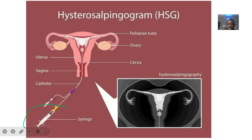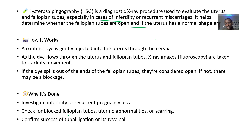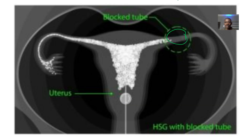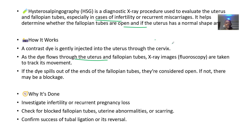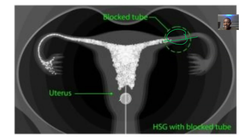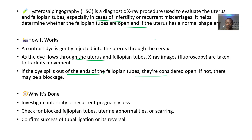A contrast dye is injected to make the image very clear. The contrast is gently injected into the uterus through the cervix. As the dye flows through the uterus and the fallopian tubes, X-ray images known as fluoroscopic images are taken to track the movement of the dye. If the dye was not able to go past a point, that indicates a blocked fallopian tube. If the dye spills out of the ends of the fallopian tubes, they are considered open; if not, the fallopian tubes are blocked.